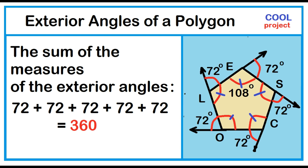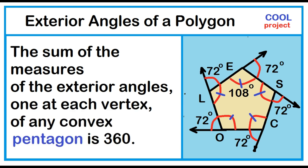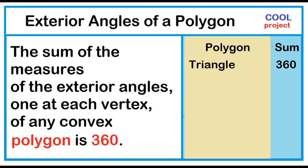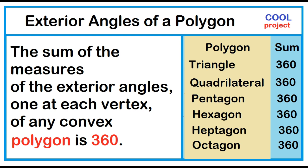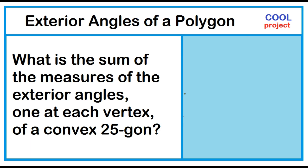72 plus 72 plus 72 plus 72 plus 72 is equal to 360 degrees. Just like convex triangles and quadrilaterals, the sum of the measures of the exterior angles, one at each vertex of any convex pentagon, is 360 degrees. Try this: What is the sum of the measures of the exterior angles, one at each vertex, of a convex 25-gon? The answer is 360 degrees.